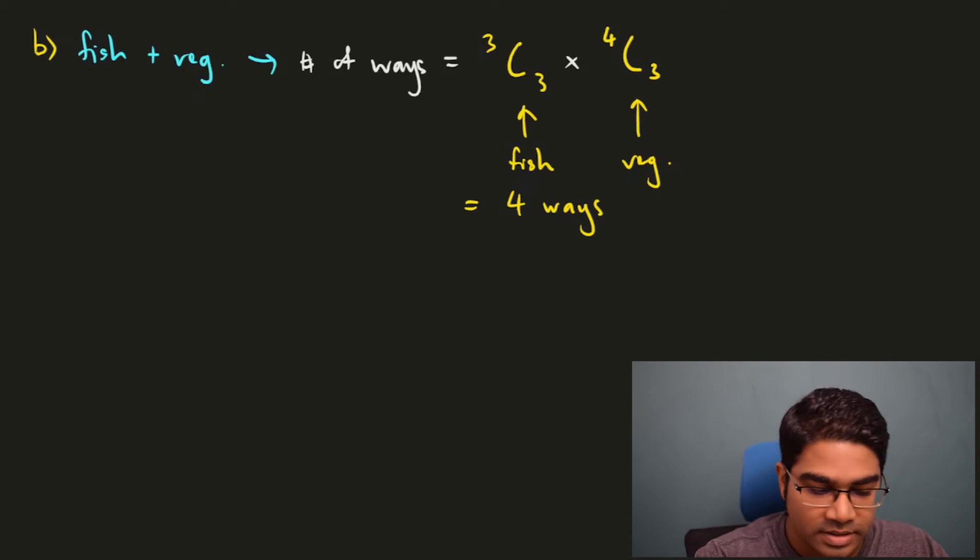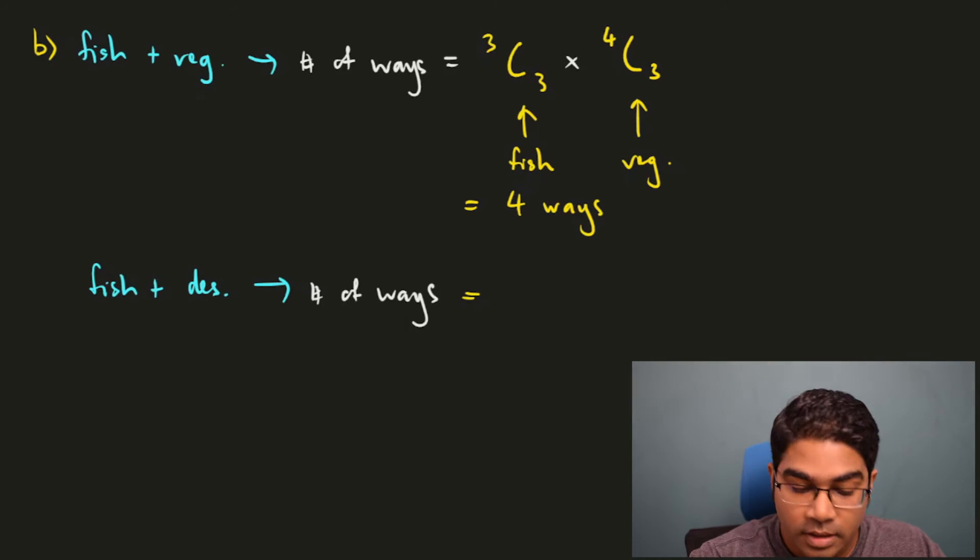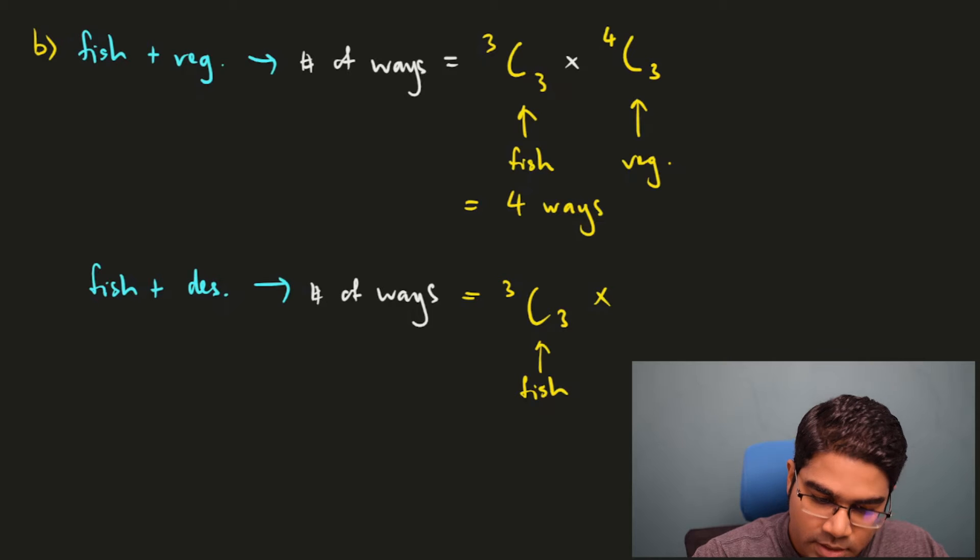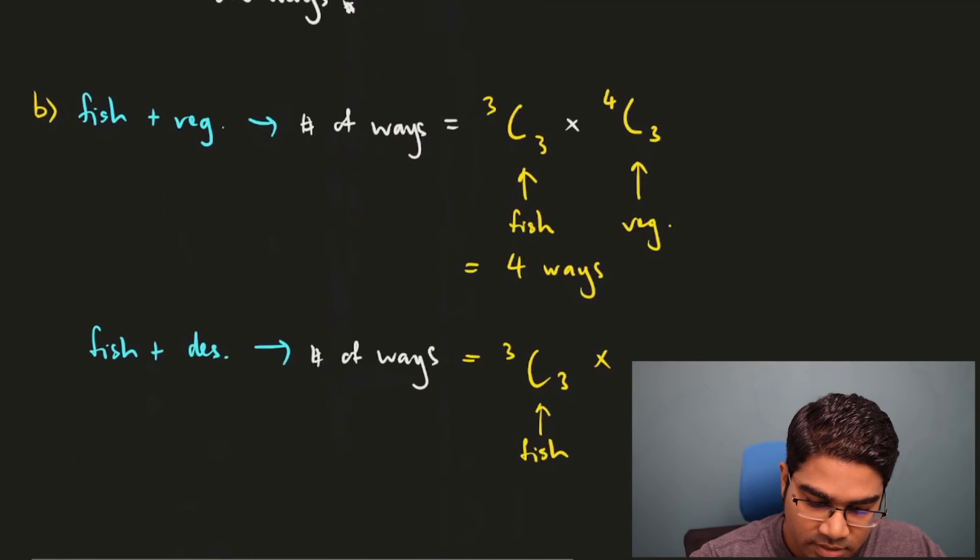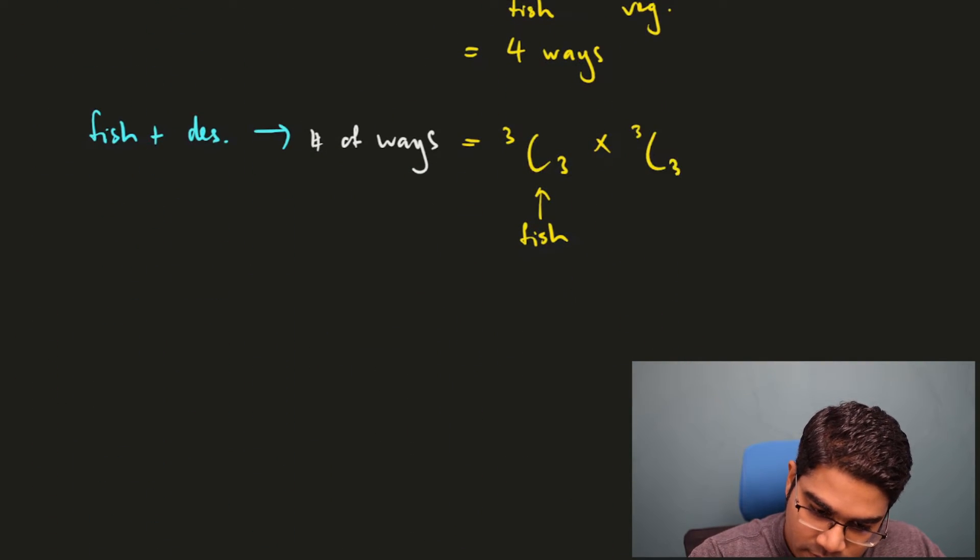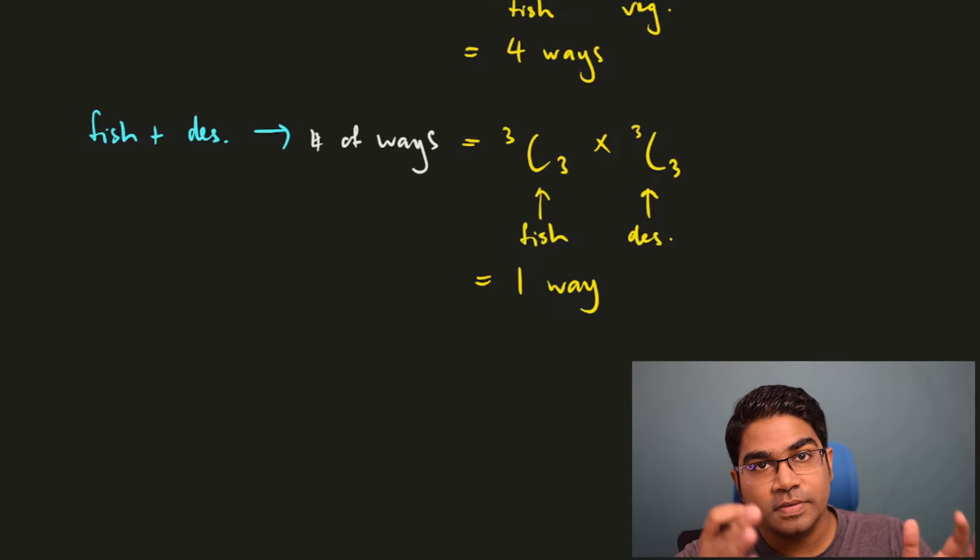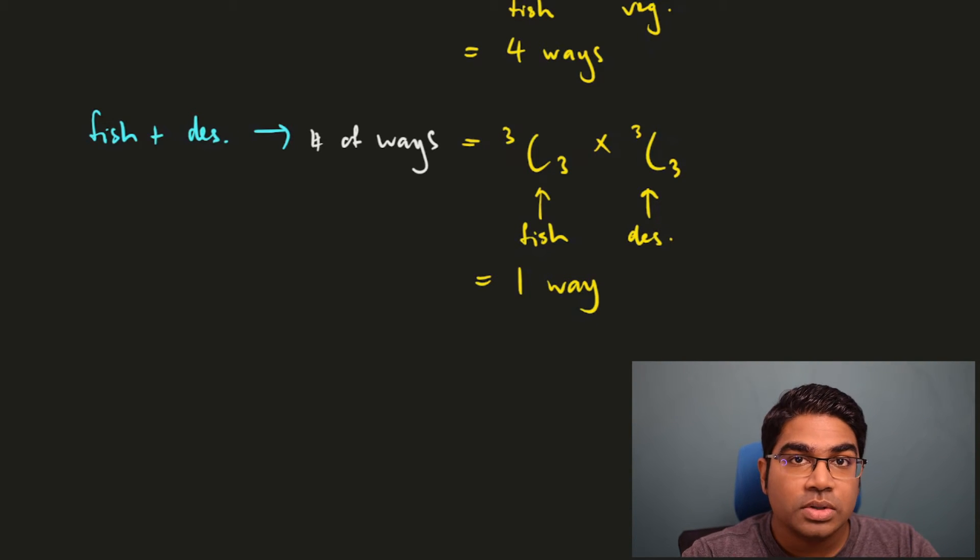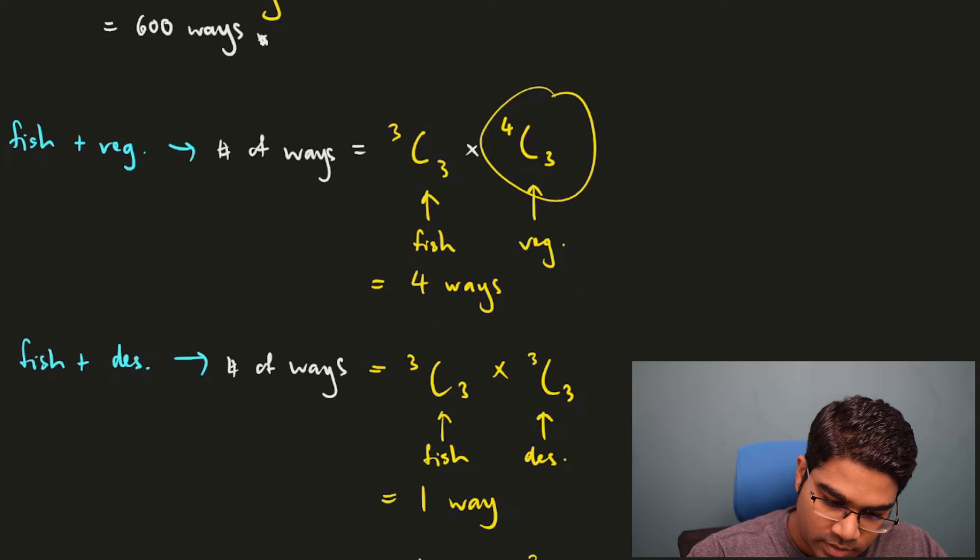So what if she decided to do fish and dessert instead? That would be, again fish would be 3C3. And for dessert she has to choose three out of a total of three again. So this would be 3C3 as well. 3C3 is just one. So the total number of ways would be one way. She has no choice. If she chose fish and dessert she has to choose what is left. So there is only one option.